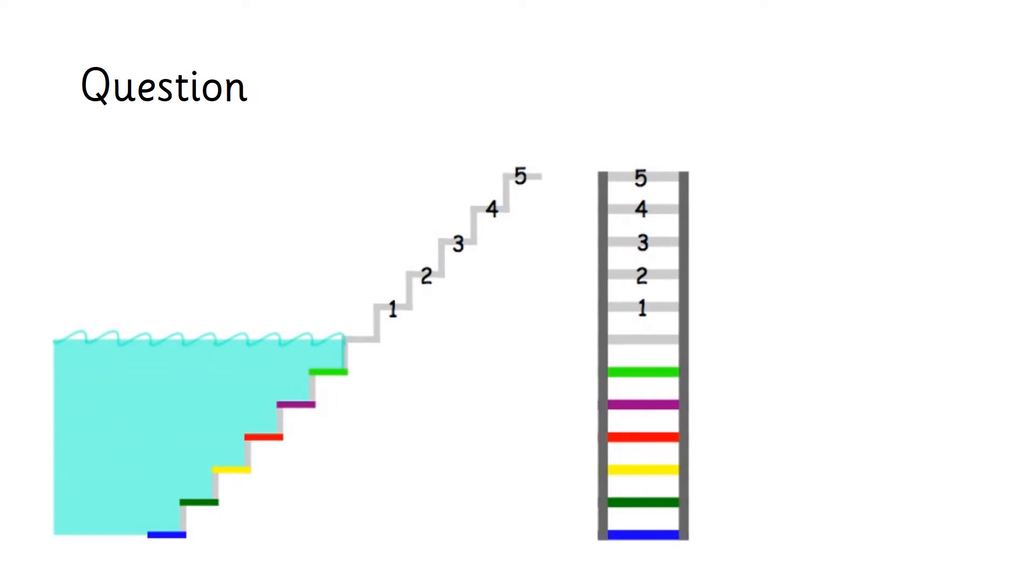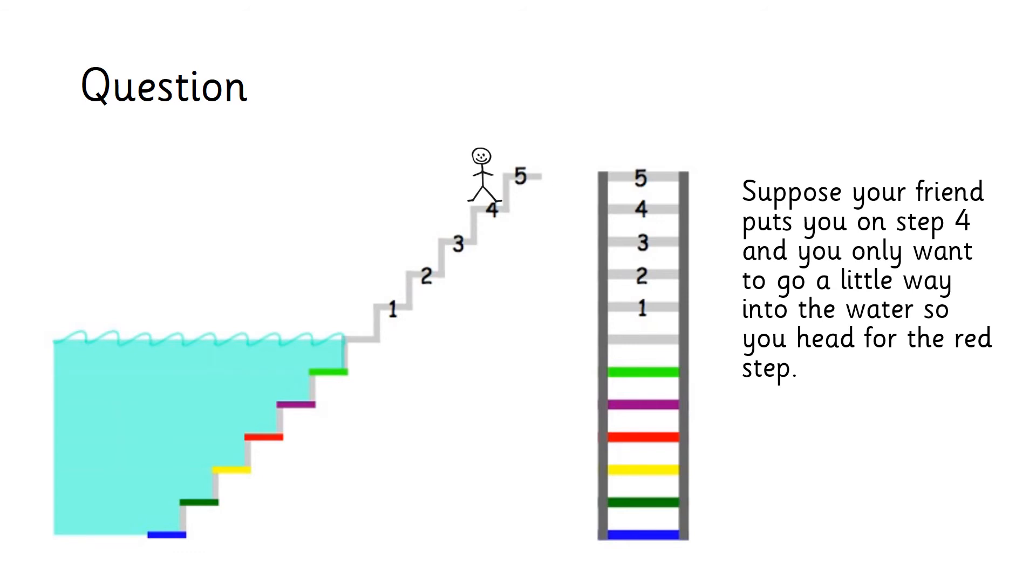I've got a question for you now. If you were going swimming with a friend, suppose your friend puts you on step four. Can you see our friend on step four? You only want to go a little way into the water, so you head for the red step. Can you see the step that's coloured red? Put your finger on it if you can.